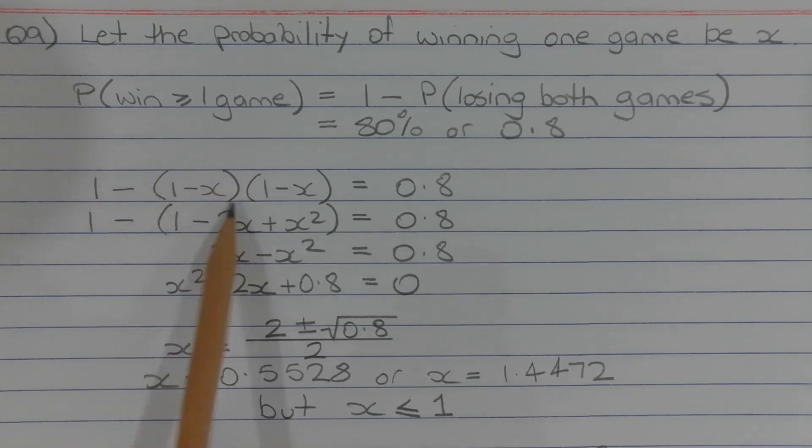Expanding the brackets here we get 1 minus (1 minus 2x plus x squared) equals 0.8. Expanding the brackets again and collecting like terms we get 2x minus x squared equals 0.8.